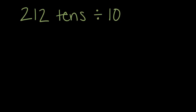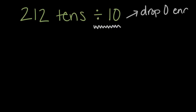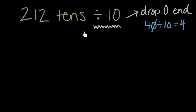Here's an example with division. Now we have dividing by ten. As you might predict, dividing by ten is the opposite of multiplying by ten, so our patterns are also the opposite. Instead of adding a zero to the end of a whole number, we would drop a zero at the end. So for example, if we had 40 divided by ten, we would drop that zero and end up with four. If you divide 40 into groups of ten, you have four groups.